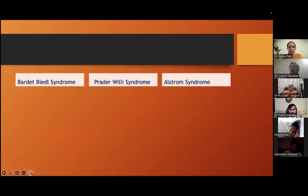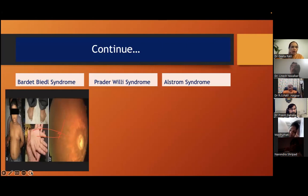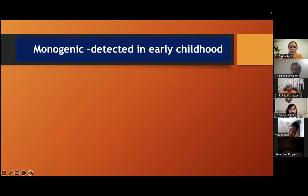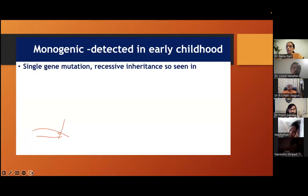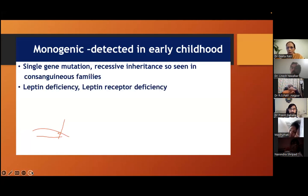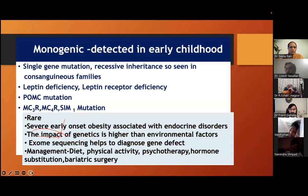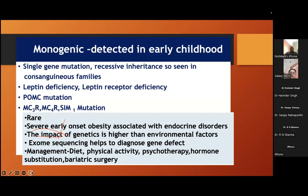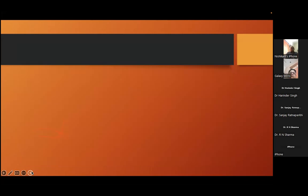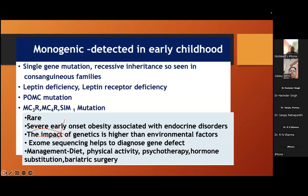We should at least have basic knowledge — like Bardet-Biedl syndrome presents with retinitis pigmentosa and short hands and feet. Monogenic obesity is detected in early childhood — a very differentiating point. It is due to single gene mutation, recessive, and goes in consanguineous families. Causes include leptin deficiency and leptin receptor deficiency. It is rare, early onset — not late onset — with an endocrine disorder, easy to identify but very difficult to manage. We will refer to the endocrinologist.